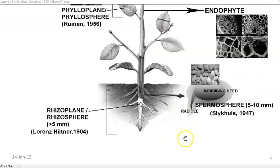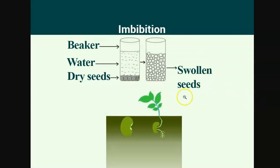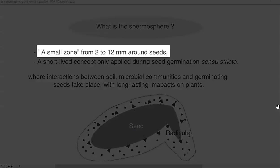The next sphere is the spermosphere, which extends up to 5 to 10 millimeters from an imbibed seed. The imbibed seed further produces a root through the formation of the radicle. An imbibed seed is a dry seed that has been soaked in water overnight — the seeds absorb water, become swollen, and then produce the radicle root as well as the shoot region. Thus, spermosphere refers to a small zone around the seeds in the imbibed seed, extending from 2 to sometimes 12 millimeters from the seed.